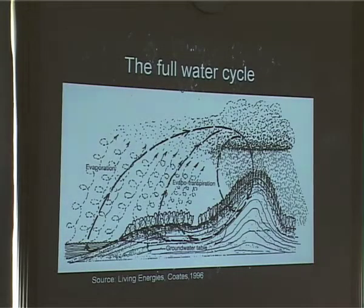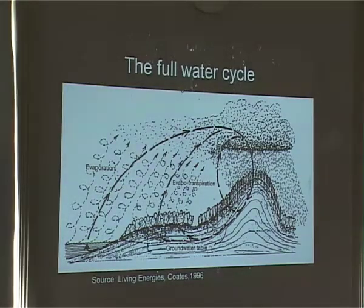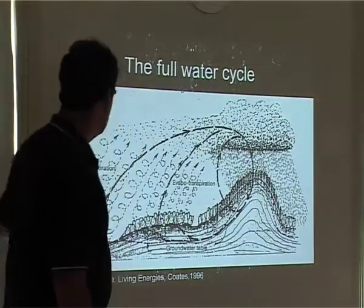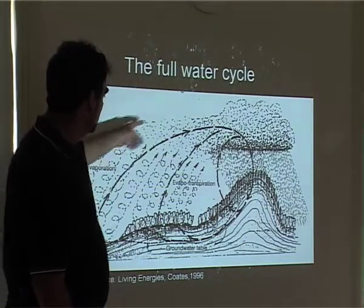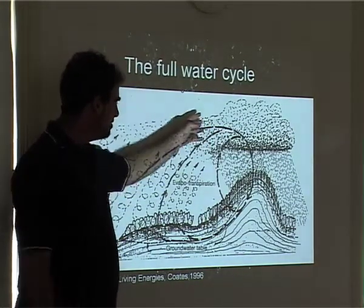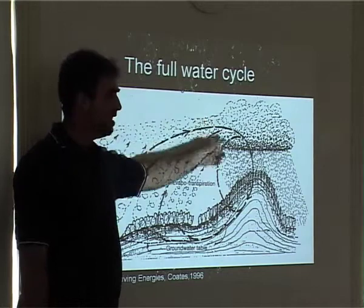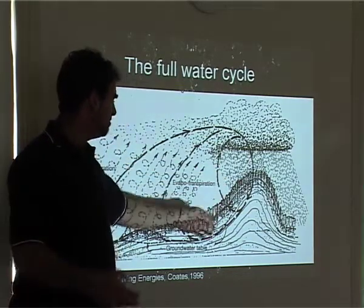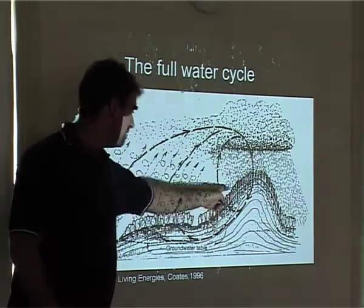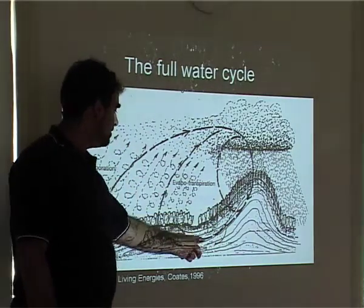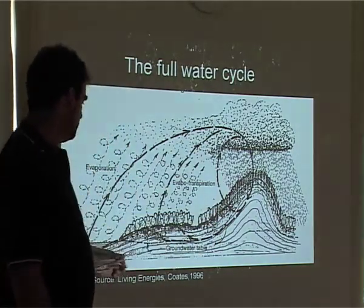This is the full water cycle. What we've got happening is evaporation, forming clouds over the land, rain coming down — so precipitation. Some of this runs off, and some of it accumulates into the groundwater table.